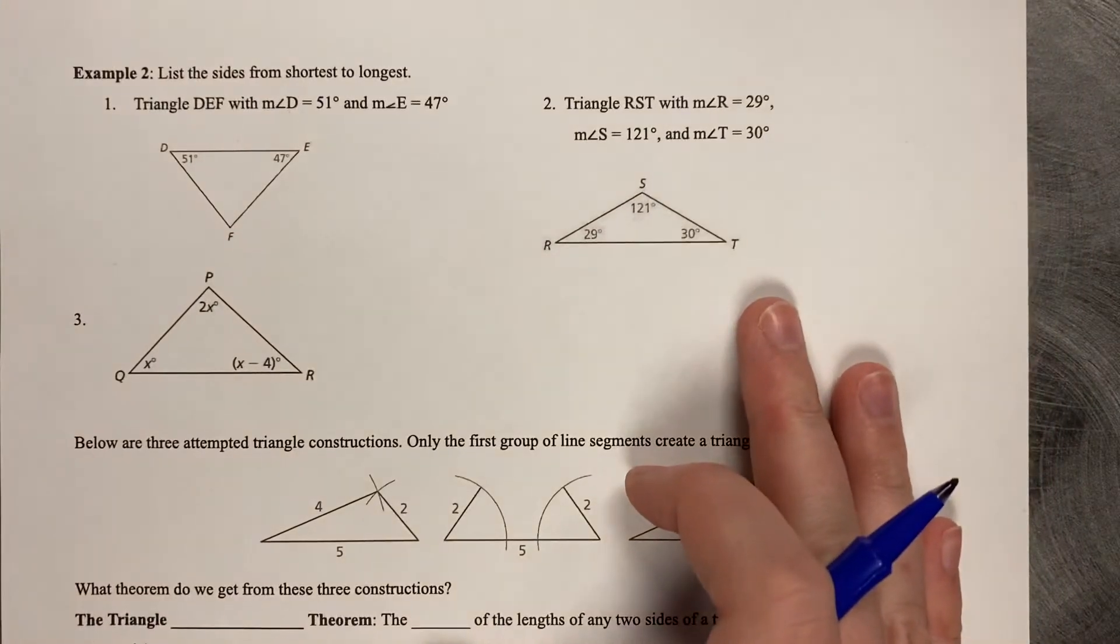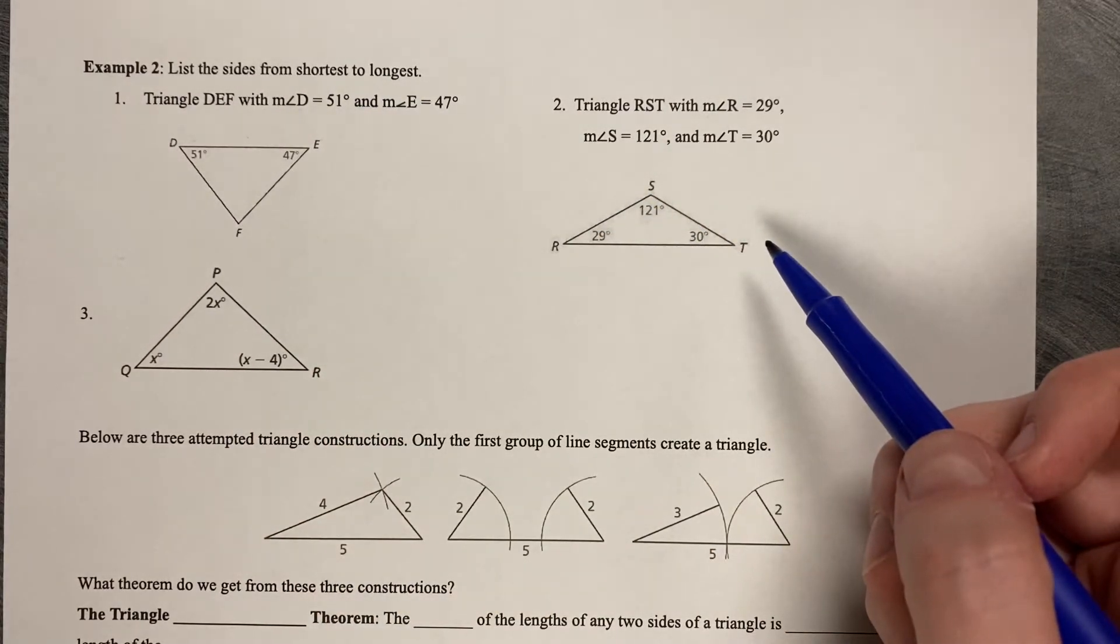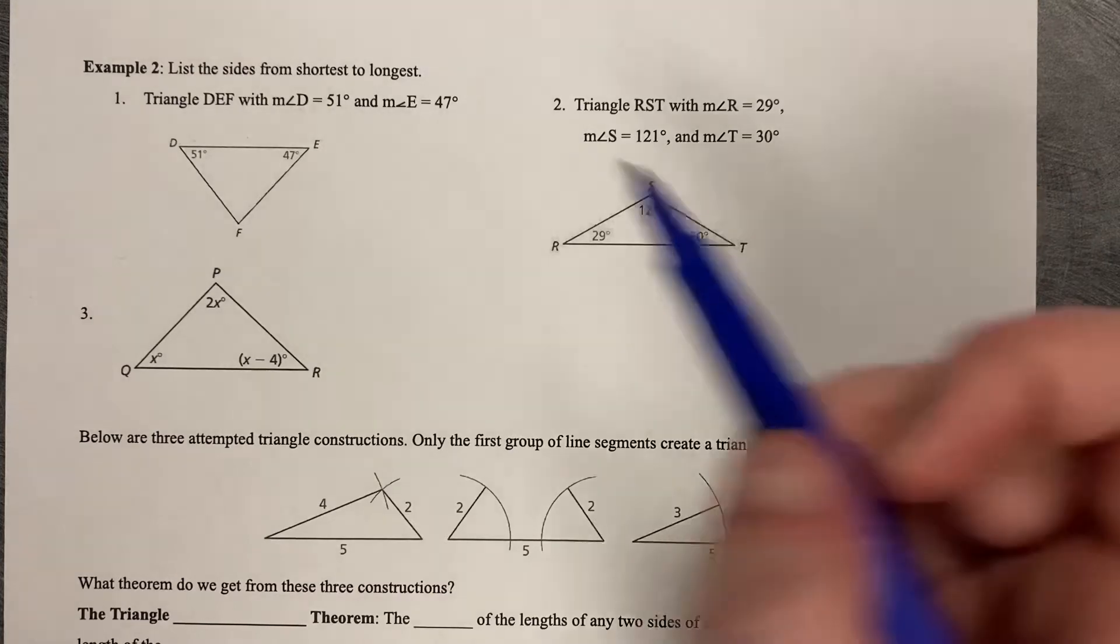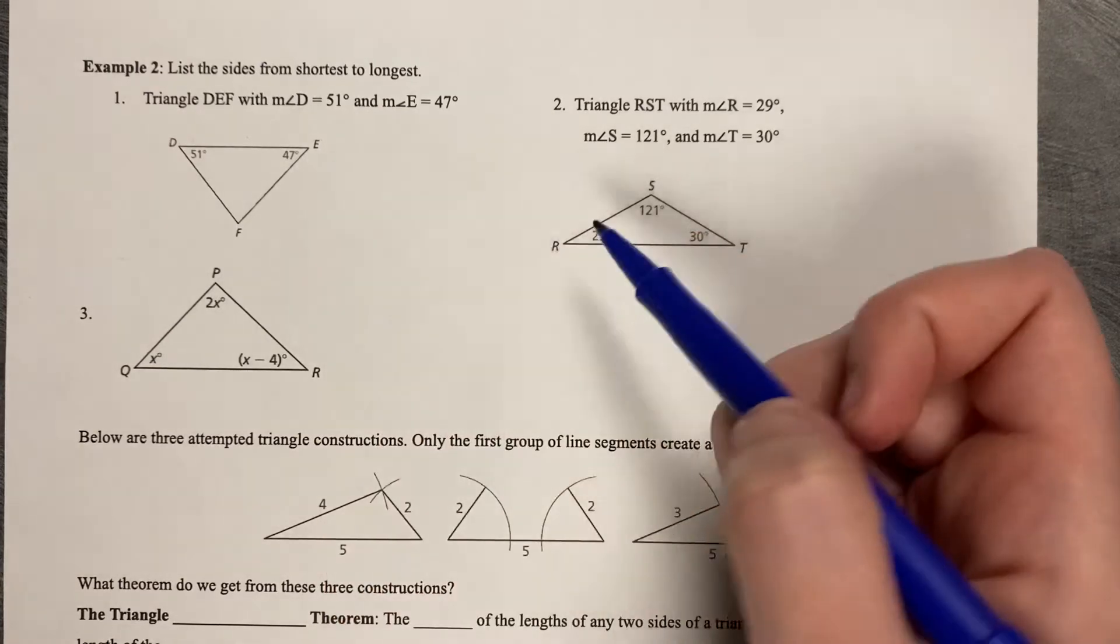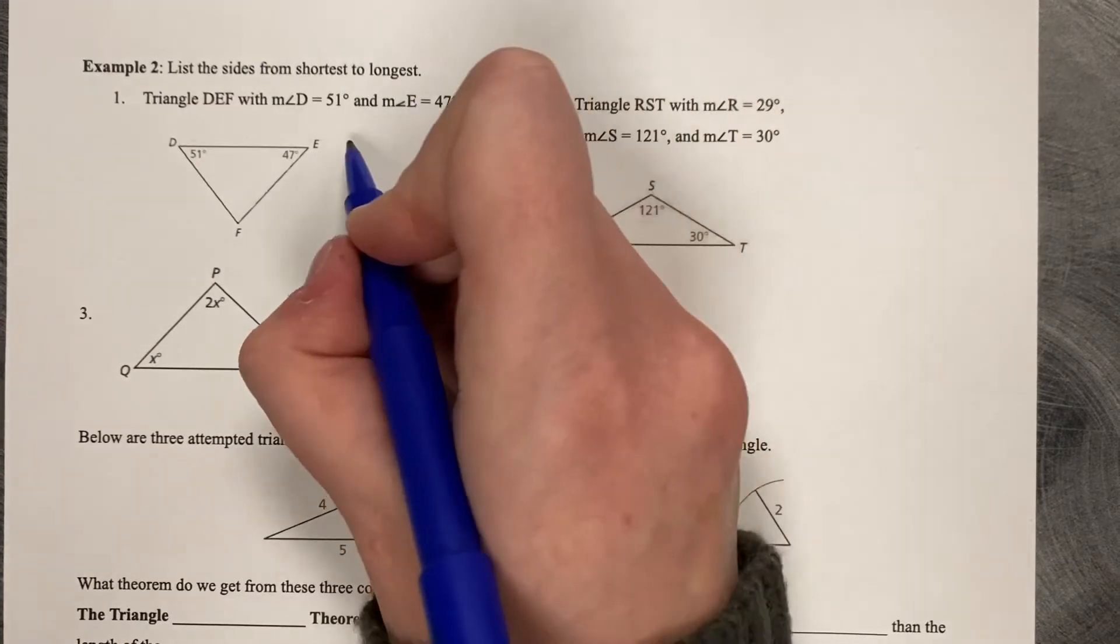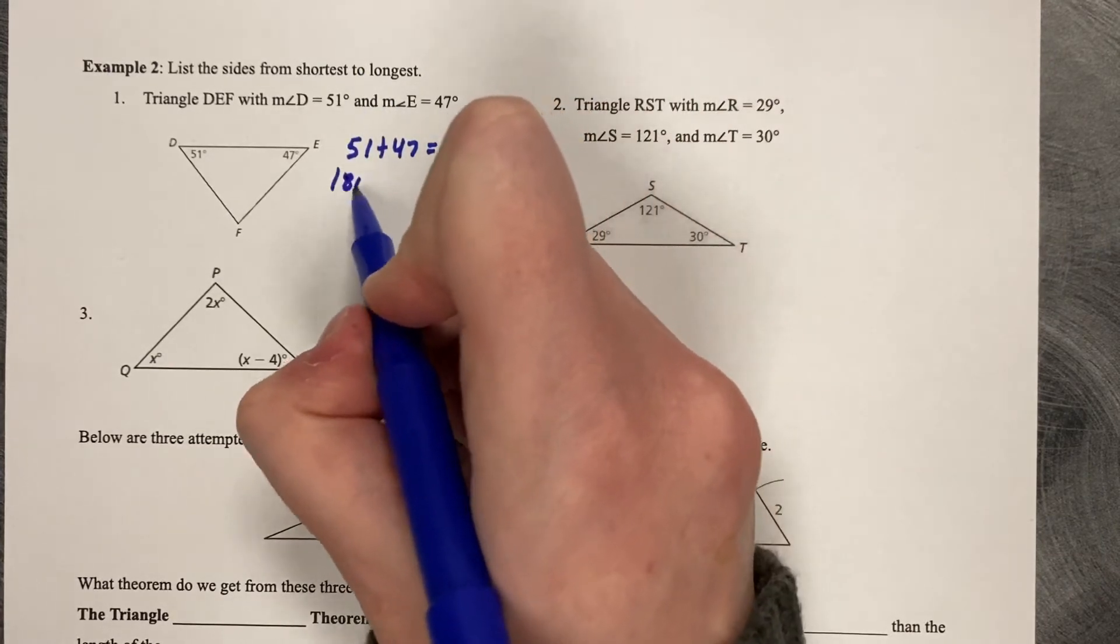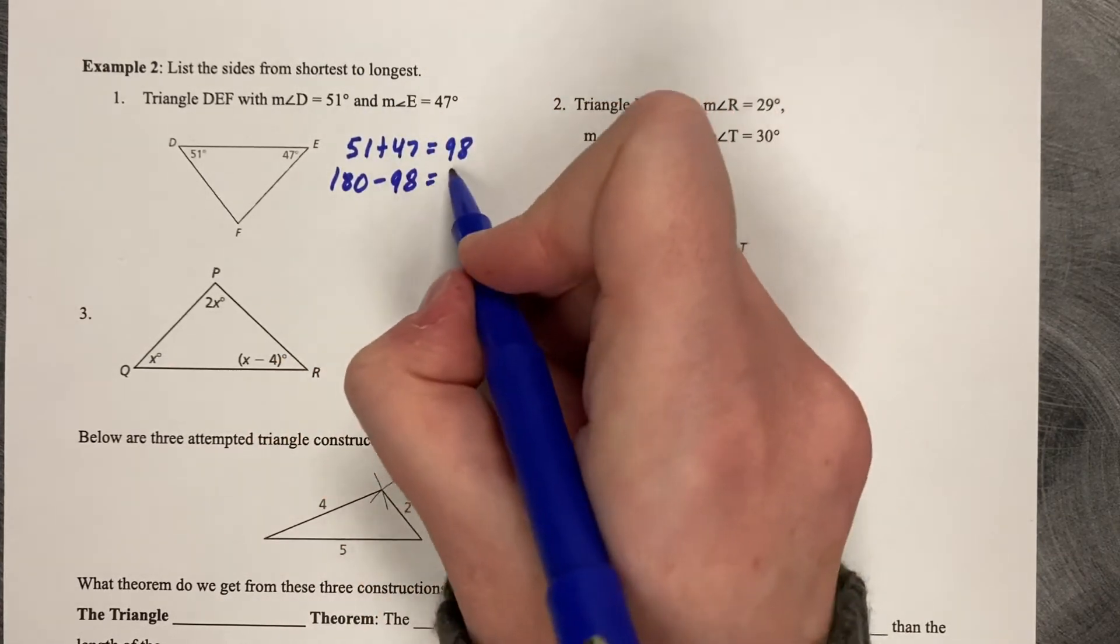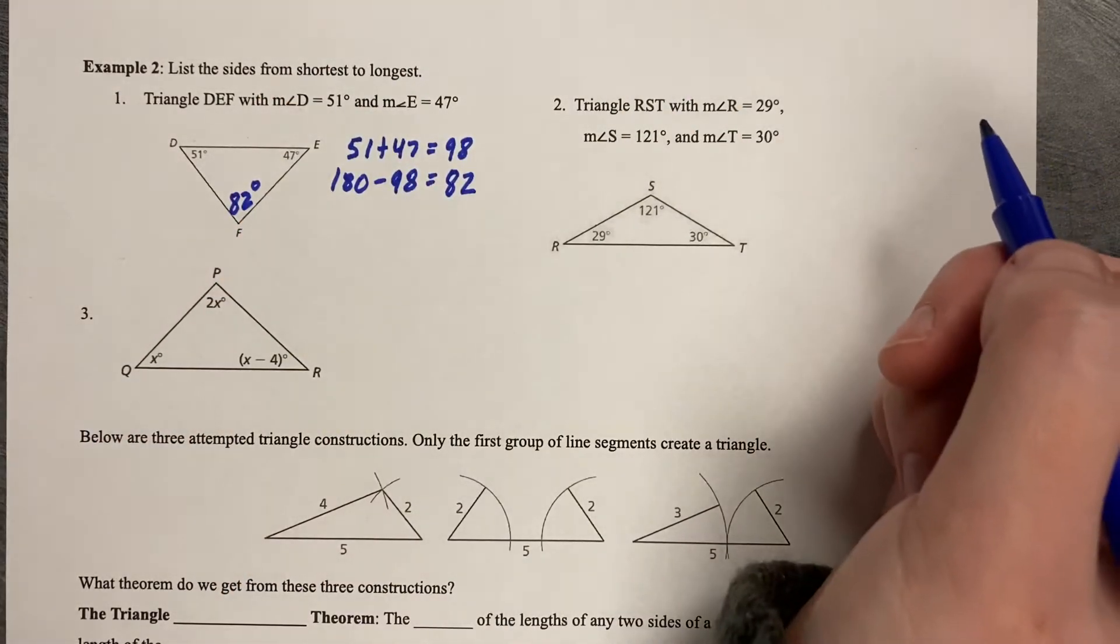Now you can go the other direction as well. Example number two. You can list the sides, the side lengths, from shortest to longest. So what you're looking for now is you're looking for the smallest angle. And then you start from there. Opposite side length goes with the smallest angle. So on this one, I've got a 51, a 47. And I'm not sure what angle F is. But we do know that three angles in a triangle add to 180. So we can figure out angle F. So 51 plus 47 is 98. 180 minus 98 leaves me with 82. So funny enough, that's my largest angle.